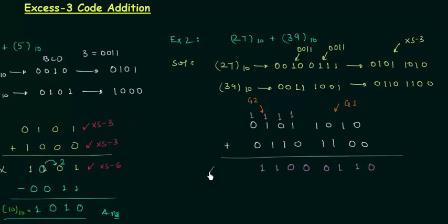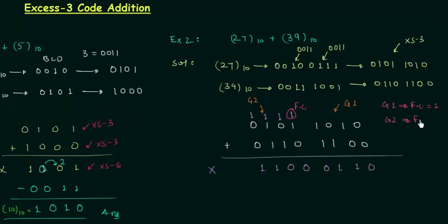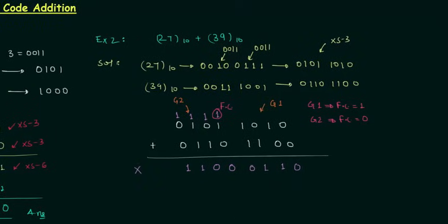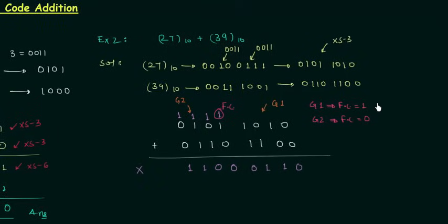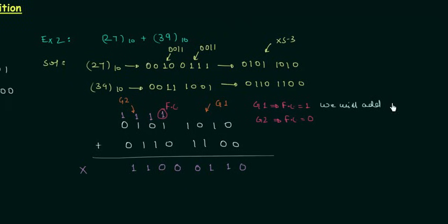The answer obtained is incorrect and we have to correct it. We will focus on group 1 and group 2. For group 1 the final carry is equal to 1, and for group 2 the final carry is equal to 0, because there was no carry when we added the last bits of group 2. Whenever the final carry is equal to 1 we will add 3 (0011), and whenever the final carry is equal to 0 we will subtract 3 from the obtained result.